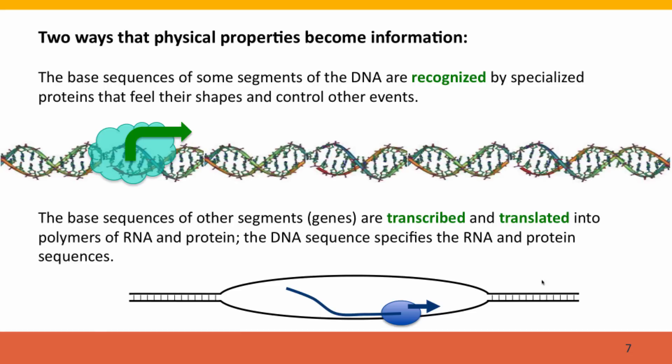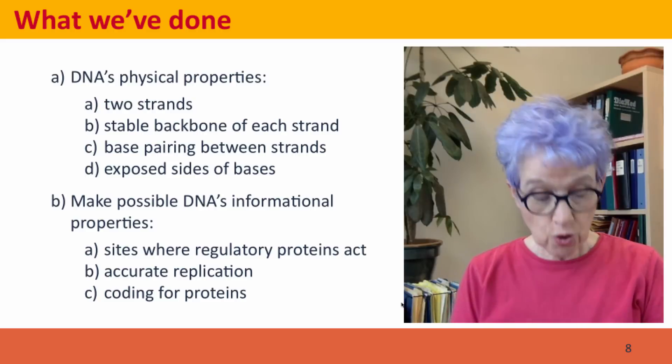This is just a little diagram of the process of transcription, where we have double helical, double-stranded DNA that's come apart. It's unzipped so that this protein can make an RNA copy of one strand.